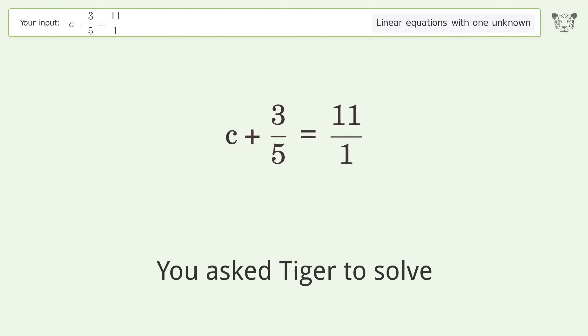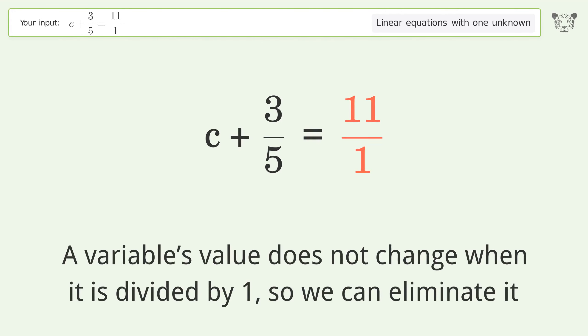You asked Tiger to solve this. This deals with linear equations with one unknown. The final result is c equals 52 over 5. Let's solve it step by step. Division by one: a variable's value does not change when it is divided by one.